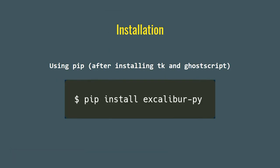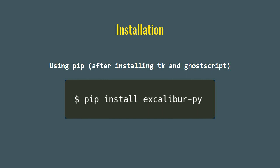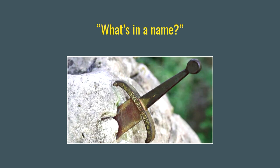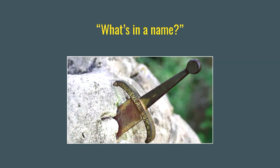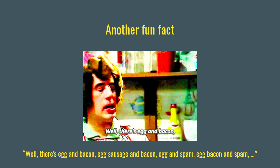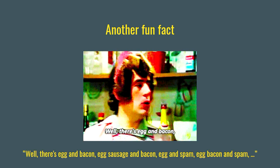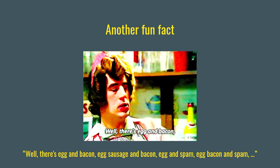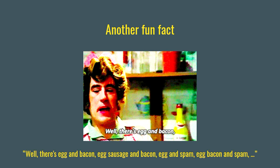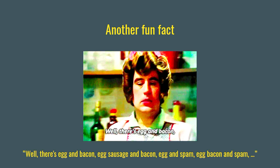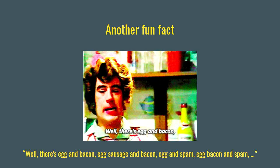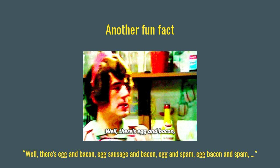Installation is again pretty simple — after installing the dependencies, you just do pip install excalibur-py. As you can guess, it is named after the legendary sword of King Arthur. Another fun fact: the meta-syntactic variables in the Python documentation are called spam and eggs instead of the traditional foo and bar, based on the Monty Python spam sketch.